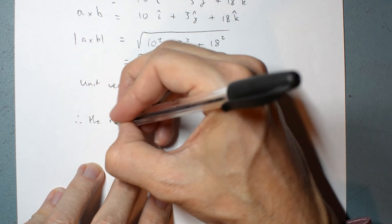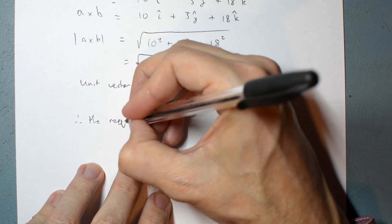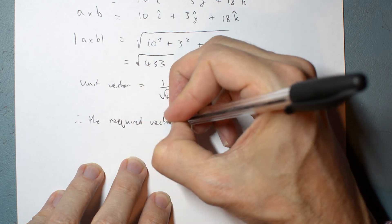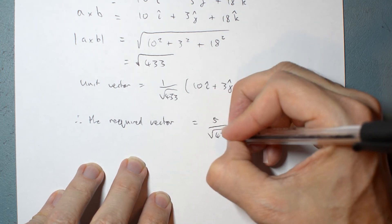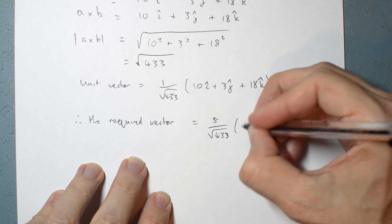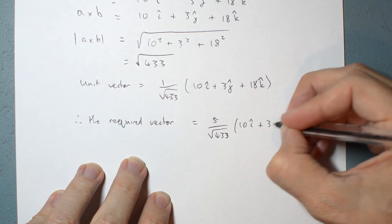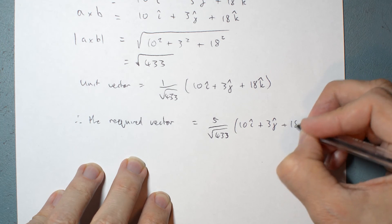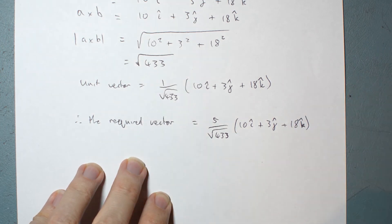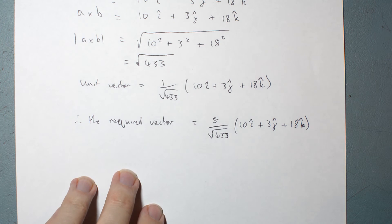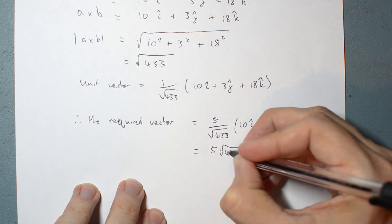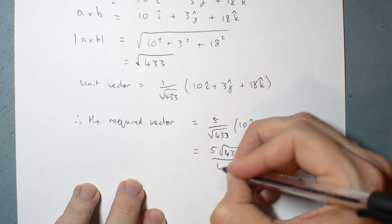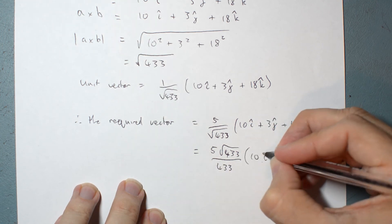And so therefore, the required vector of magnitude 5 is going to be 5 over root 433 times 10 I plus 3 J plus 18 K. Now you may prefer to rationalize the denominator, so you would go 5 root 433 over 433 of the same vector.